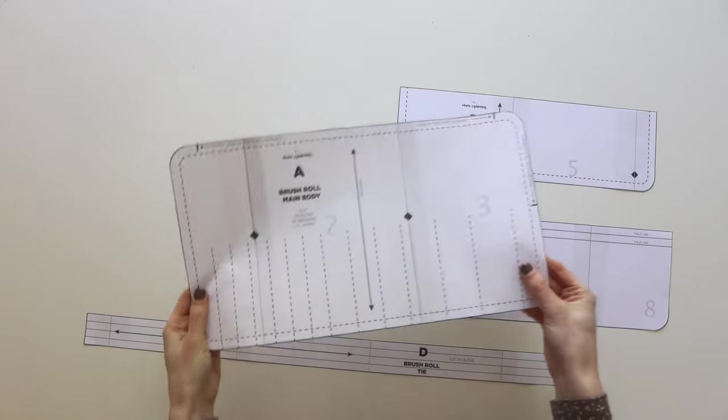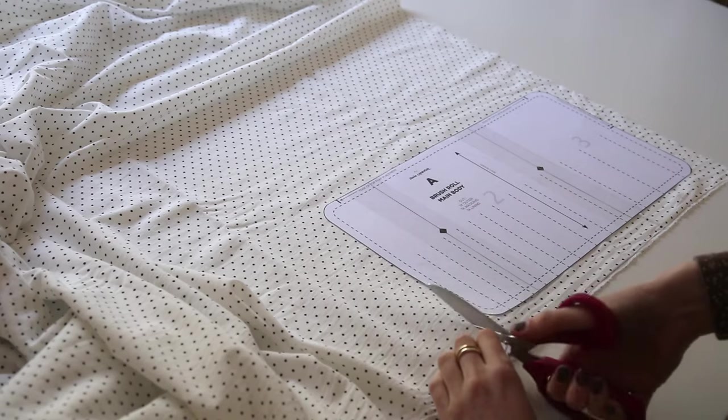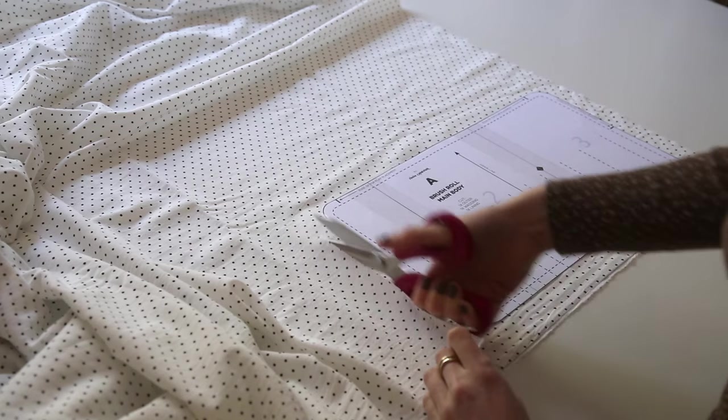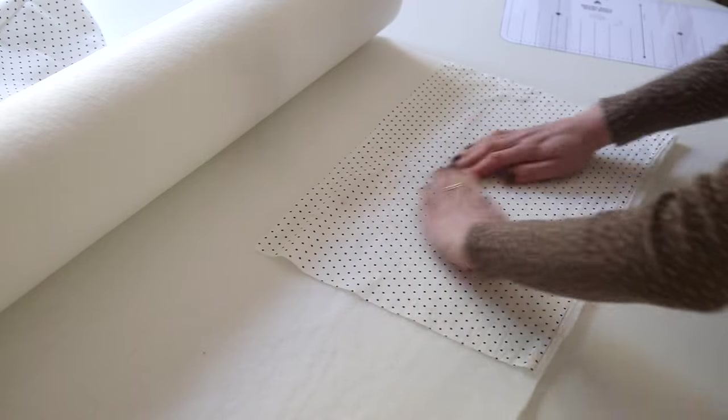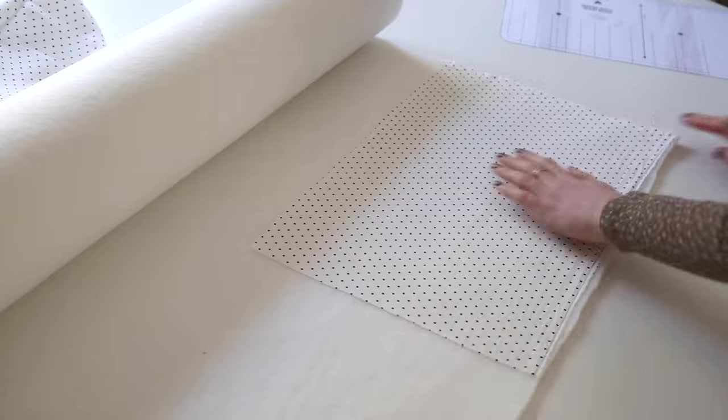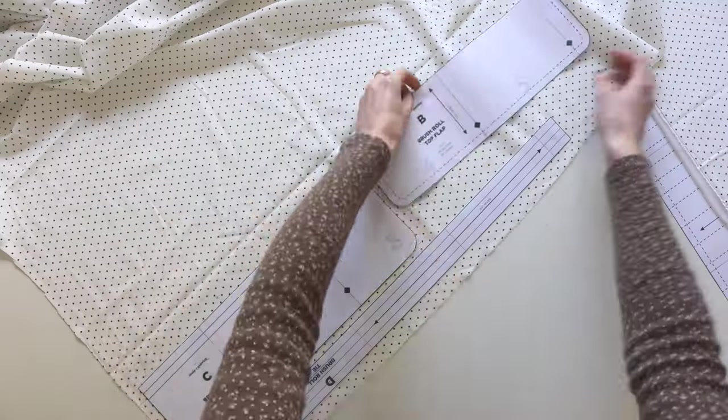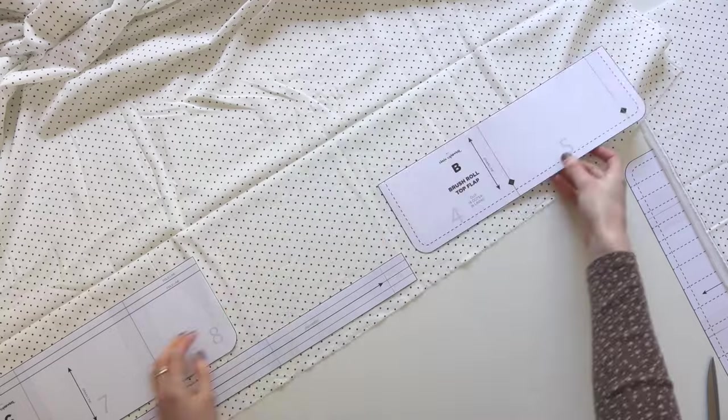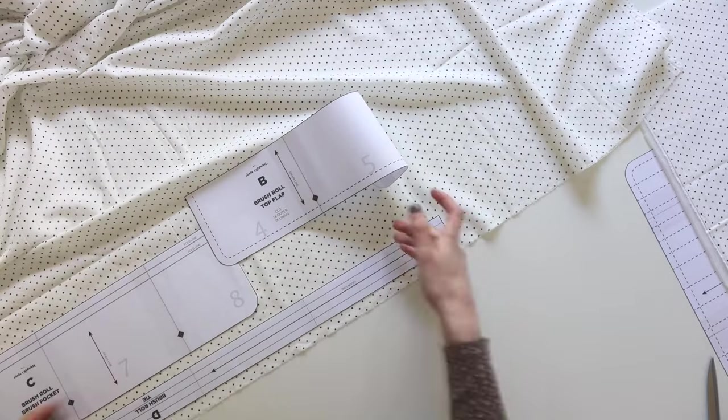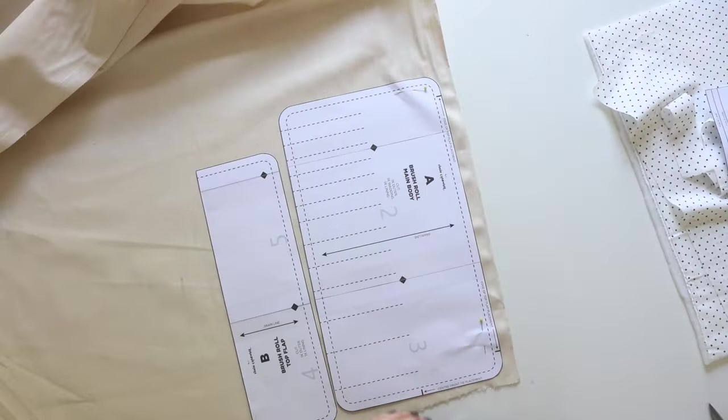Now we're going to start cutting out our fabric. So I'm going to start with pattern piece A and for this piece you're going to want to cut slightly larger than the pattern piece if you're going to quilt it. Cut that out in your outer and wadding both slightly bigger, but then the lining piece can be the same size as the pattern. Then we just go ahead and cut out the rest of the pieces.